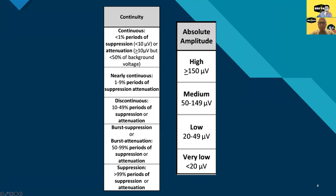There are two ways to look at amplitude. One is simply the voltage: less than 20 microvolts is very low amplitude, 20–50 is low, 50–150 is medium, and 150 or above is high. The other approach uses suppression or attenuation terms: suppression is less than 10 microvolts, and attenuation is a reduction of more than 50% but above 10 microvolts relative to the background. The voltage categories are used for continuous EEG, while suppression and attenuation terms apply to intermittent patterns like burst suppression or burst attenuation.